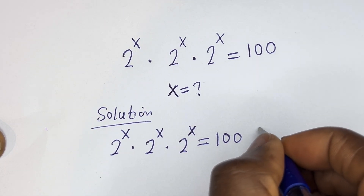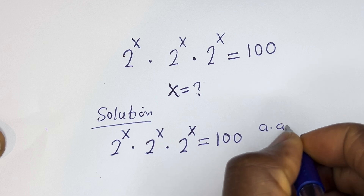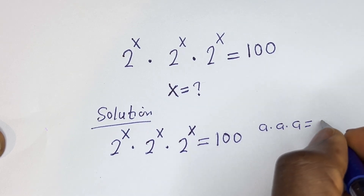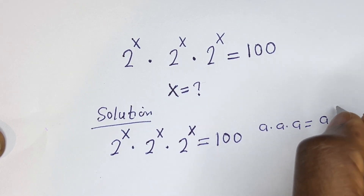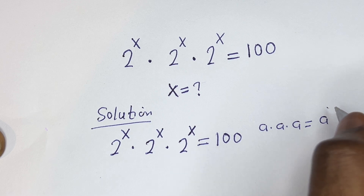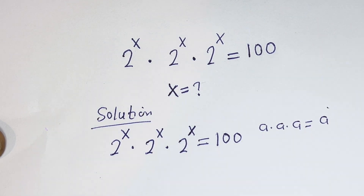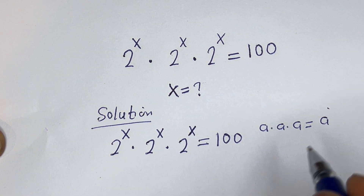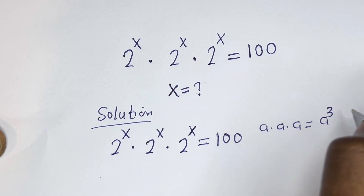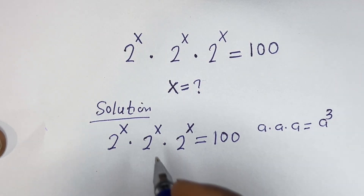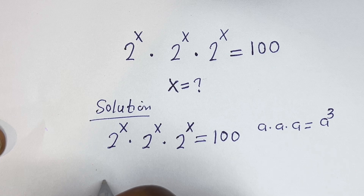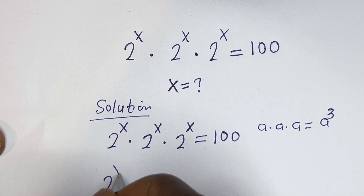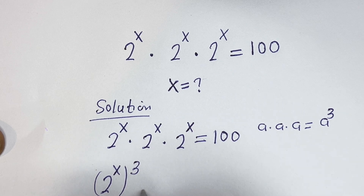Take note that if you have a multiplied by a multiplied by a, this is equal to a to the power of 3. Then this can be written as 2 to the power of x, to the power of 3, is equal to 100.